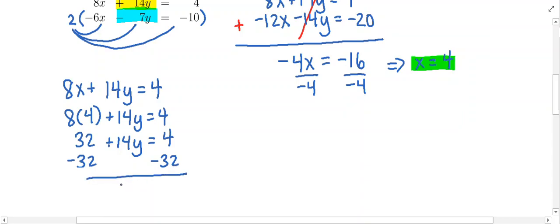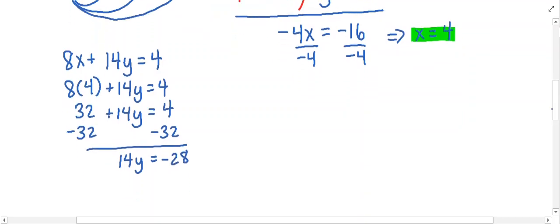We're going to subtract 32 from both sides. We're going to get positive 14y equals negative 28. And now we just have to divide both sides by 14. So this tells us that y is negative 28 divided by 14. That's going to be negative 2. So here is the other part of the solution.